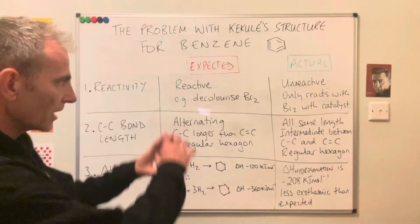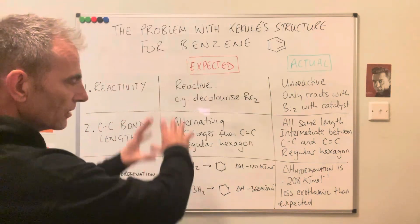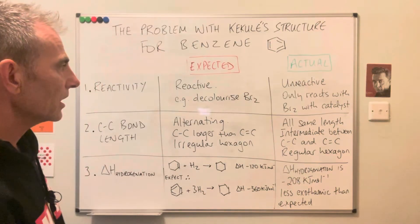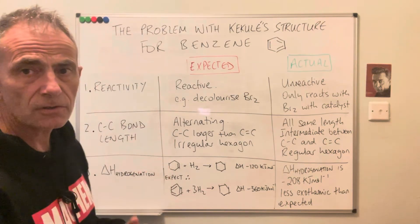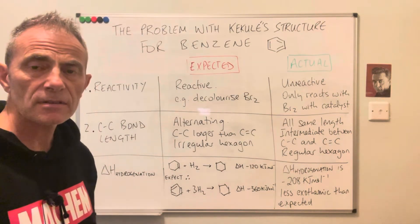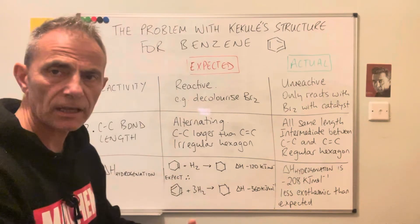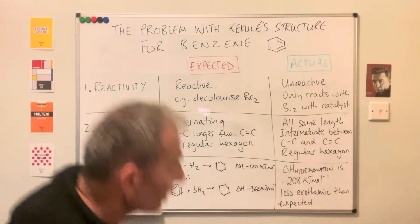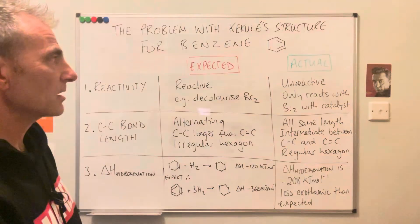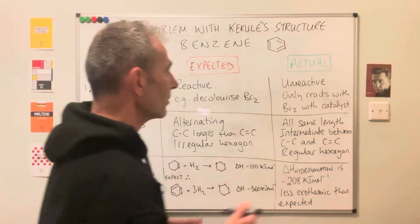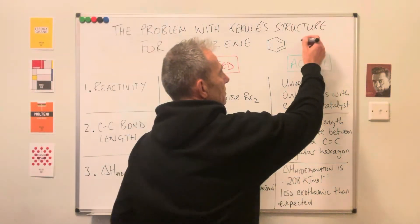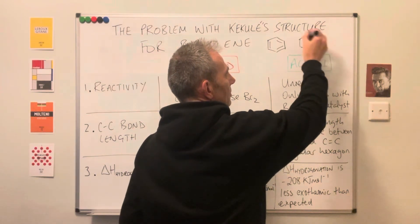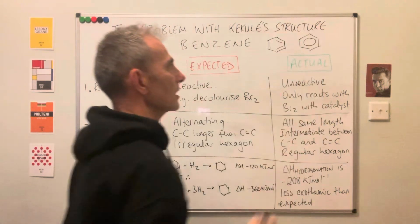That's the kind of information you would need to provide if asked to talk about the evidence that led away from Kekulé's structure and gave scientists the idea for another model for benzene — which is the delocalised structure, which looks like that.